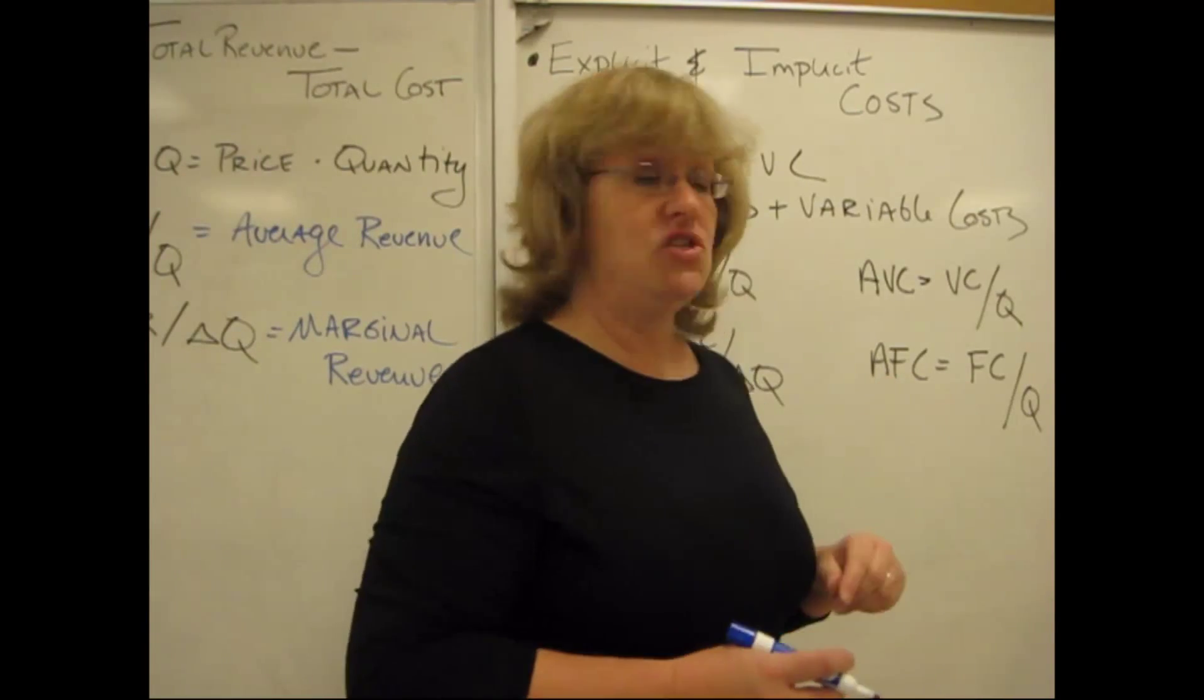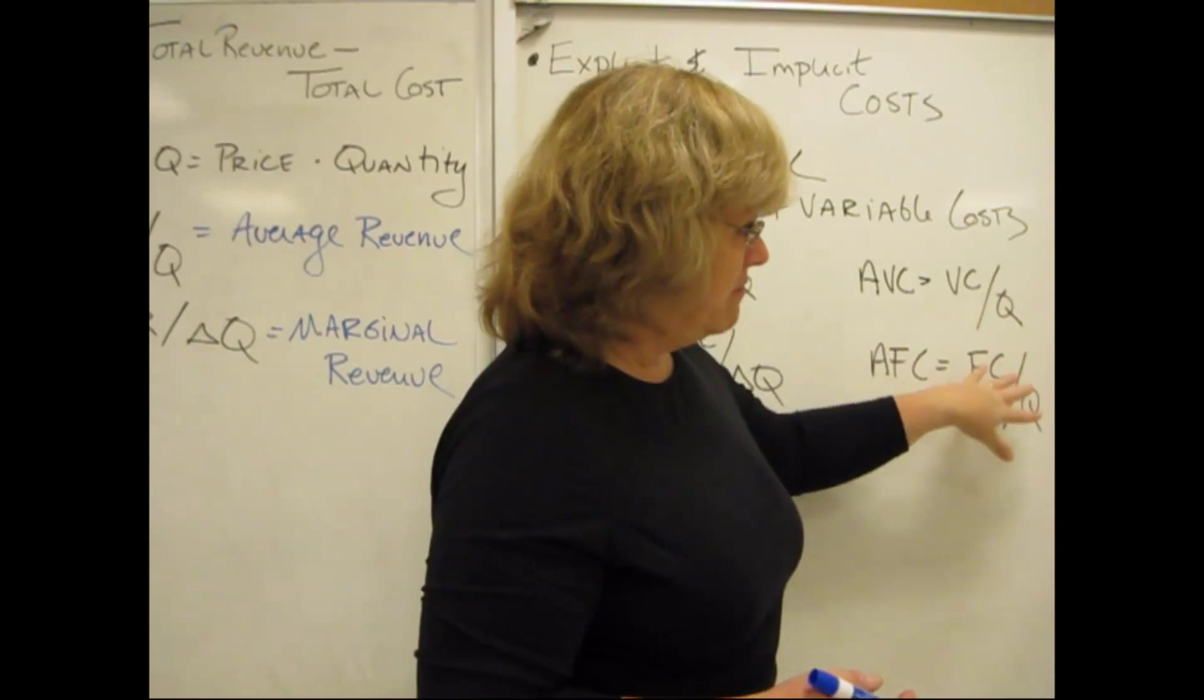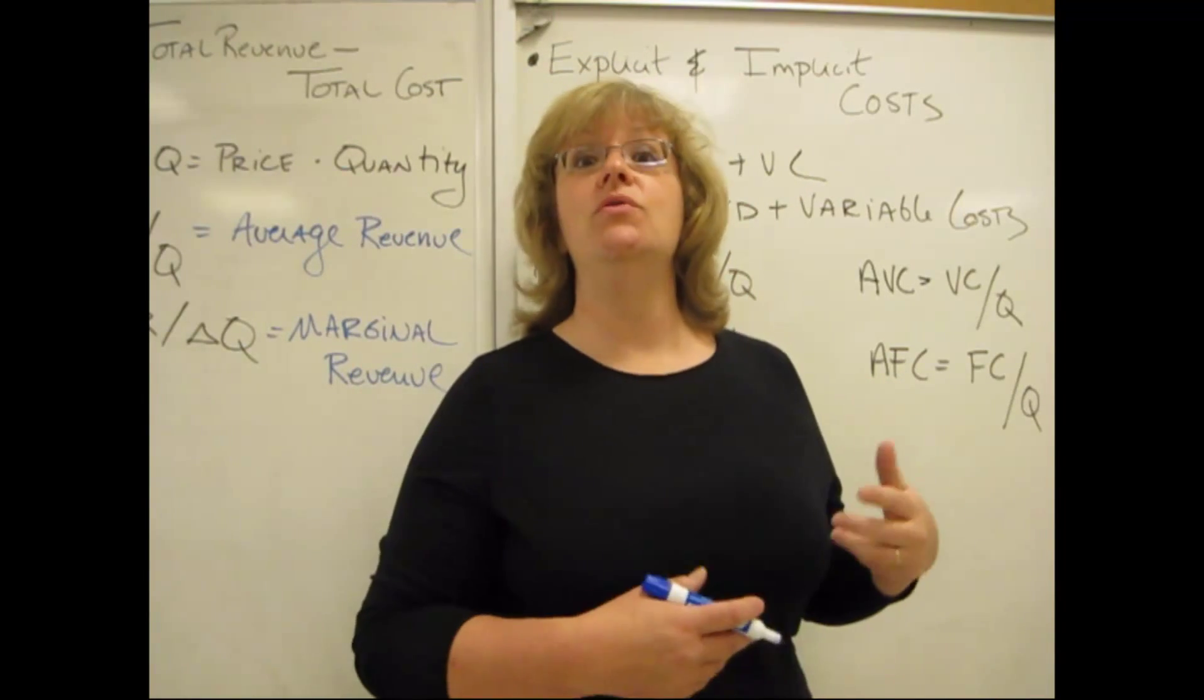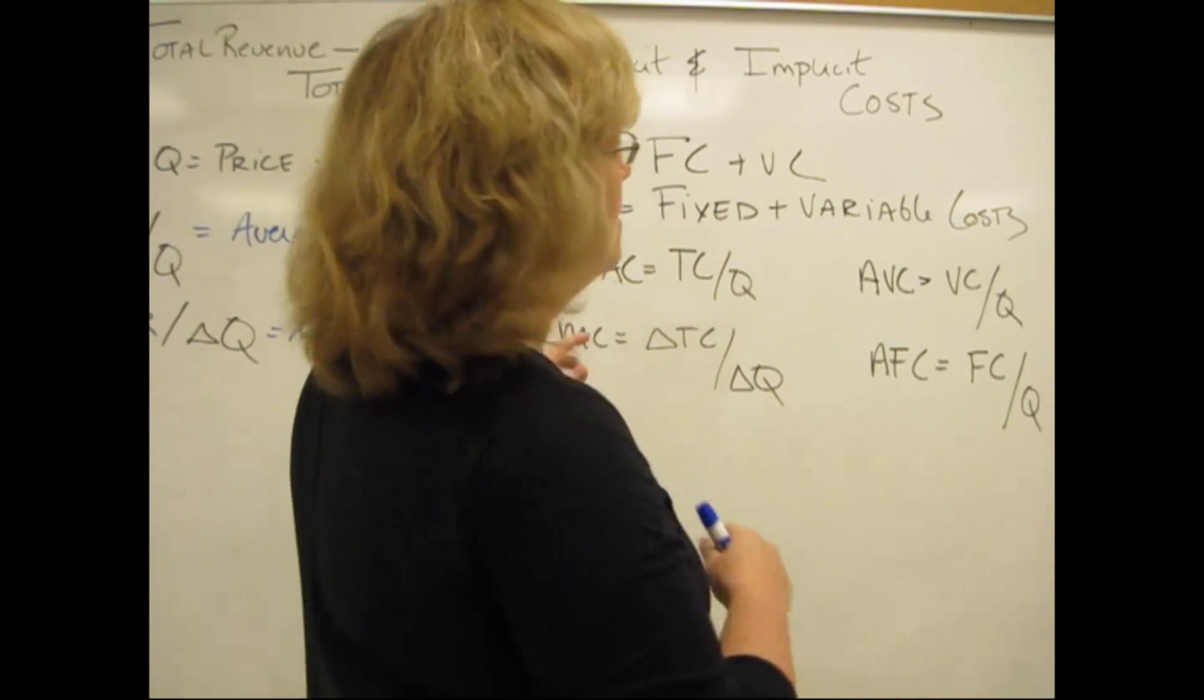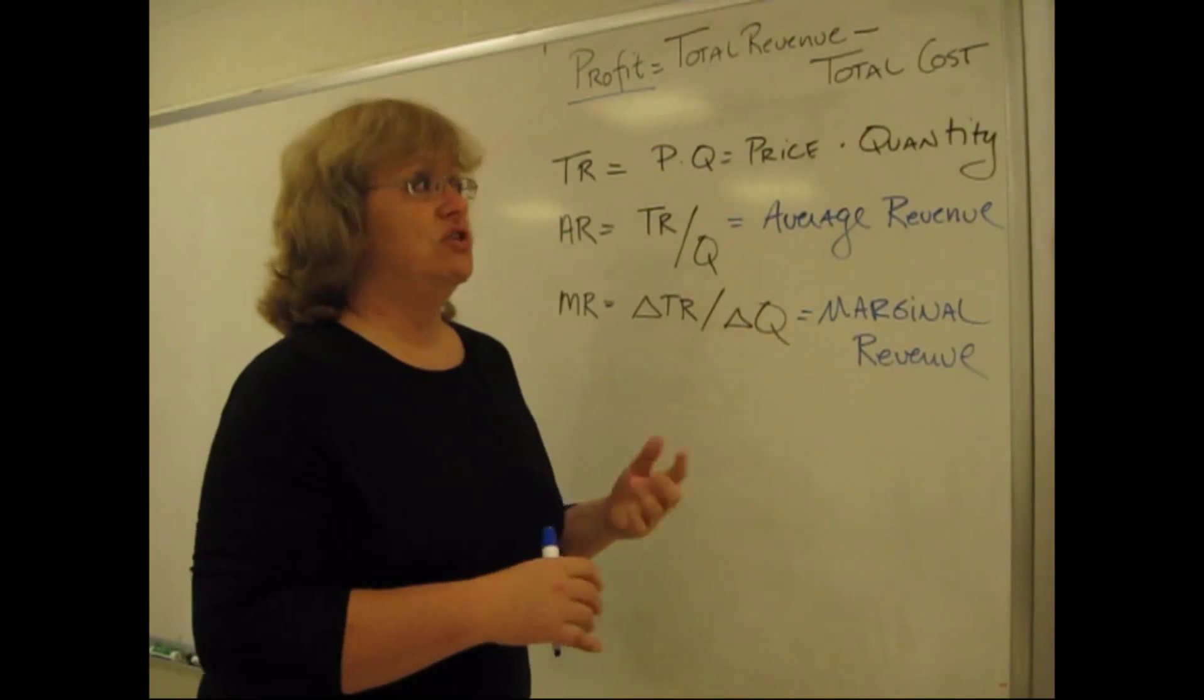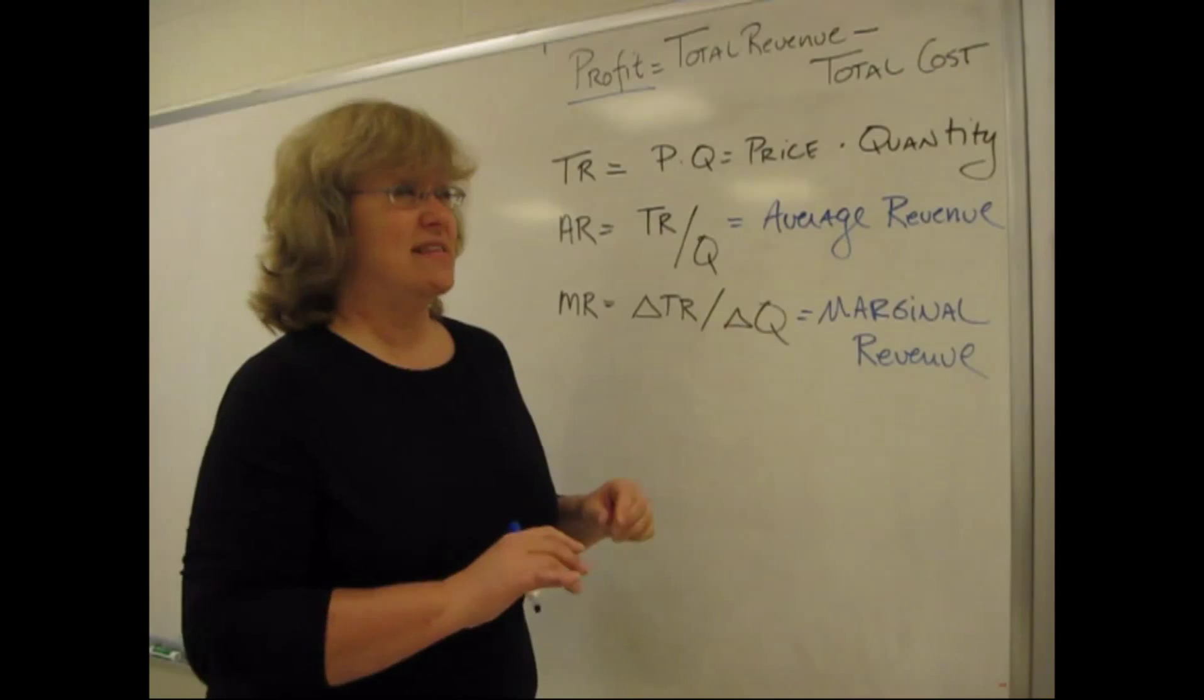We'll also in some of these chapters look at the difference between average variable cost and average fixed cost. That's taking the pieces of total cost, fixed and variable, and dividing them through by quantity. So average variable cost will give us per unit variable cost. Average fixed cost will give us per unit fixed cost. Now looking back up here at explicit and implicit cost, let's go over here and think about an example about what the differences between these two ideas are. Because this is kind of important to a lot of what we're going to do in chapters 7, 8, 9, 10, and 11.